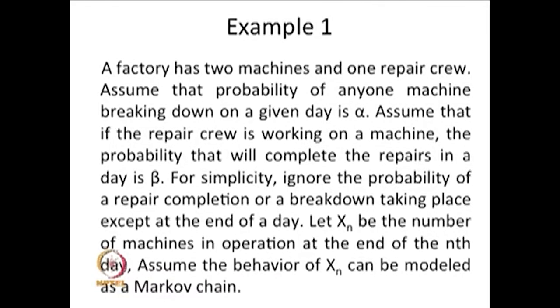Xn over n forms a discrete time Markov chain because it is a discrete time, discrete state stochastic process. The number of machines working on any day depends on how many machines were working the previous day and how many are under repair. So the dynamics depend only on the previous day, not all earlier days. Therefore, the memoryless property is satisfied and Xn is a discrete time Markov chain.